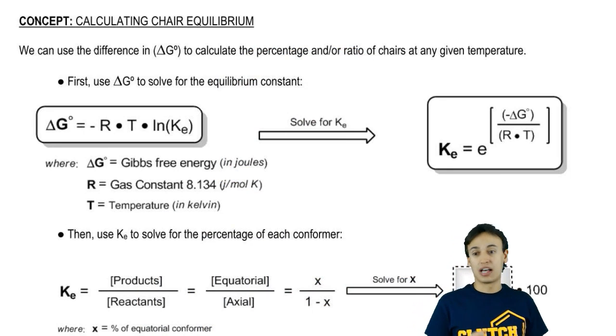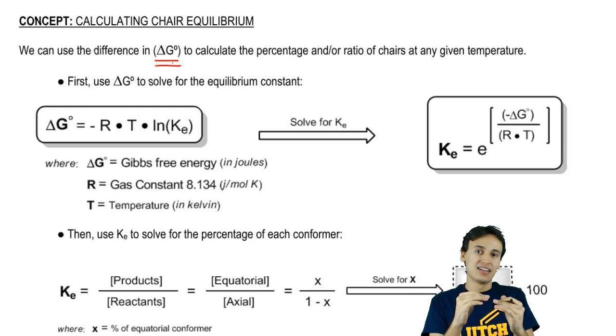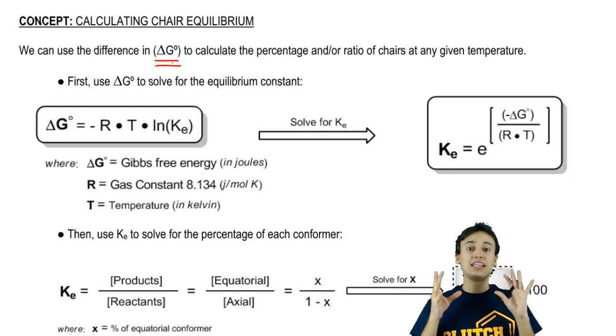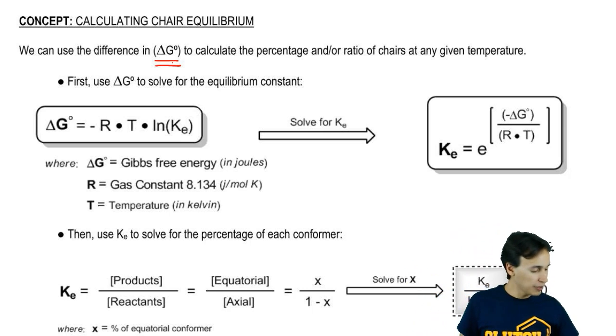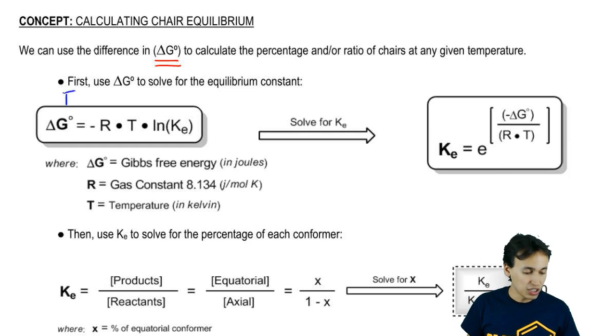It turns out that we can use that delta G value that we get from our A values to calculate those exact percentages at any given temperature. The way we do this is through the Gibbs free energy equilibrium constant equation.